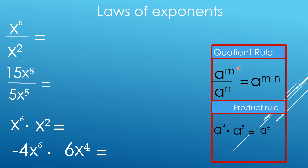So I have here the quotient rule: A raised to M divided by A raised to N is equal to A — copy the base — we are dividing and we're going to subtract the exponents, so M, the numerator's exponent, minus N, which is the denominator's exponent.